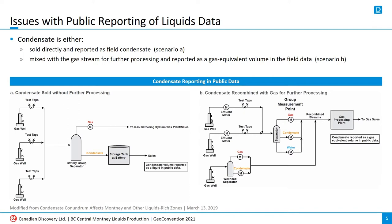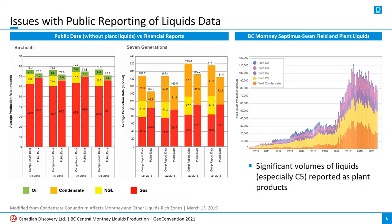This diagram is taken from AER Directive 17, and illustrates the two ways in which condensate can be reported. In the first scenario, when condensate is sold directly from the field, it gets reported as a liquid volume in the public data. But if the condensate is mixed with the gas stream and transported for further processing, as in the scenario shown on the right, the condensate volume is reported as a theoretical gas-equivalent volume. And this conversion is different from the familiar 6 to 1 MCF per BOE calculation.